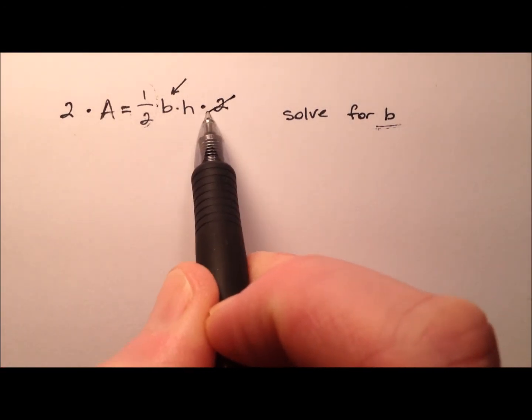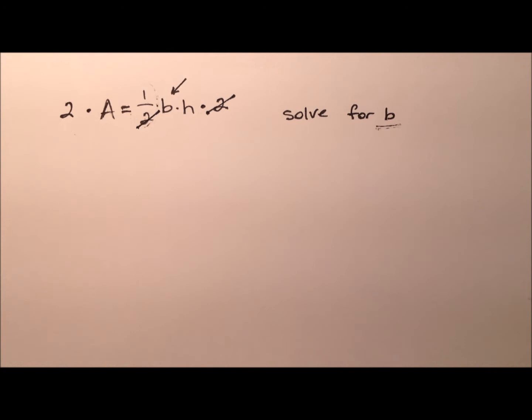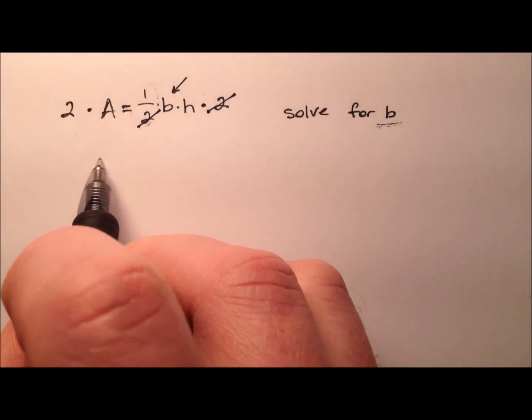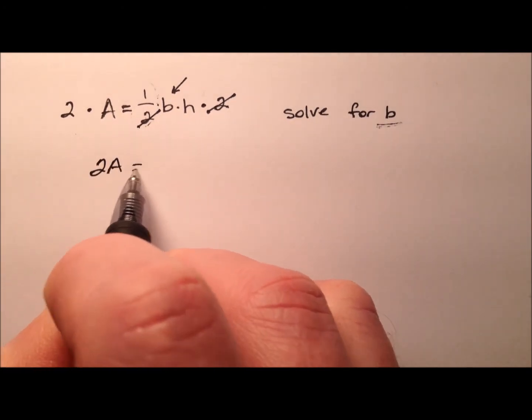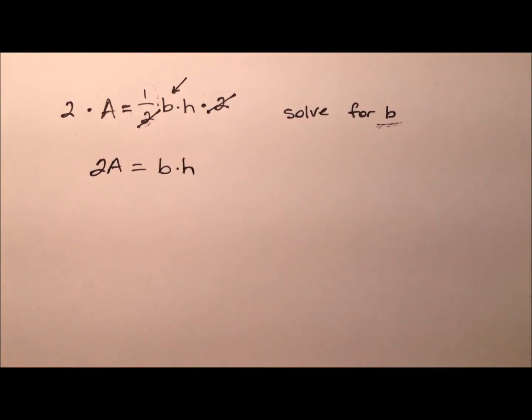On the right, we see that the 2 in the numerator and the 2 in the denominator cancel. So I'm left with 2A = bh.